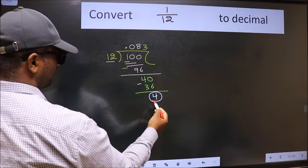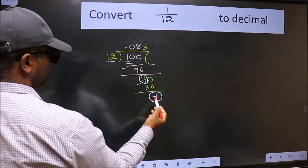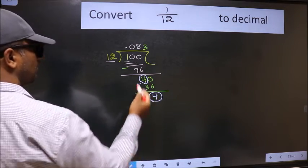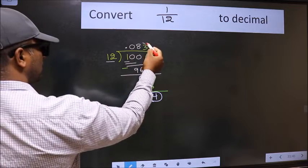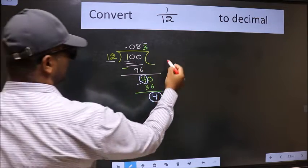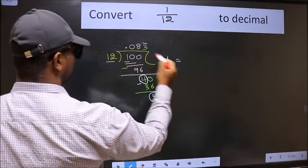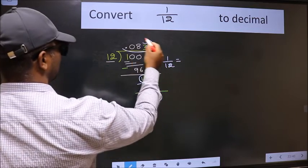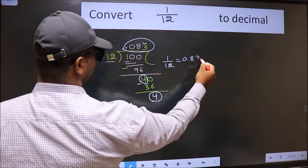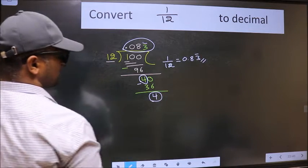We got 4 again — earlier we got 4, and now also 4. That means we get a bar on this number. Therefore, the decimal of 1 by 12 is 0.083 with a bar on the 3. This is our answer.